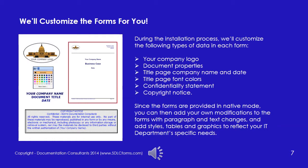When we transmit the package to you, we offer you the opportunity to let Documentation Consultants customize many features of this standardized design. If you elect this option, you'll provide us your company logo and tell us what entries you desire for document properties, the title page company name and date, the title page font colors, a confidentiality statement, and a copyright notice that normally appears on the second page of every form. Once you receive the customized forms, you can then incorporate your own modifications in much the same way you would modify any homegrown form.